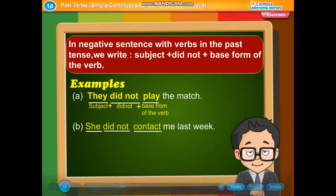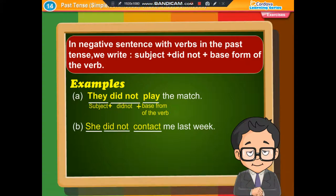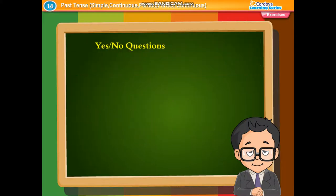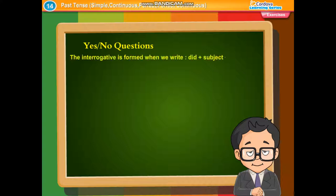In negative sentences of the simple past tense, we write: subject plus did not plus base form of the verb. The interrogative is formed when we write: did plus subject plus base form of the verb plus question mark.